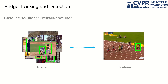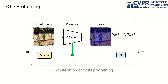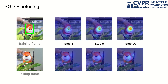A common solution for the lack of data is pre-training and fine-tuning. We train the model parameters on a large dataset and then fine-tune on a single image. Basically, SGD is adopted to pre-train the detector's weights. This is the i-th iteration of SGD pre-training. The detector model H is parameterized by theta. The training samples in this batch go through the detector and calculate the loss function L. The parameter theta i is updated to theta i+1 by gradient descent.